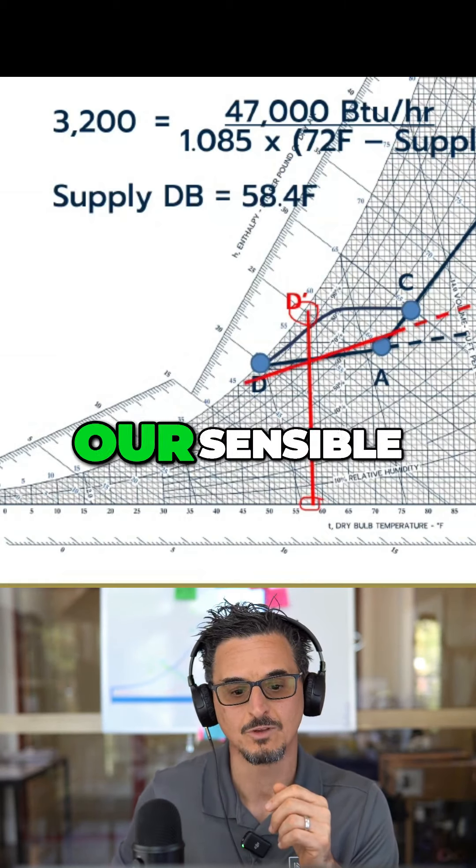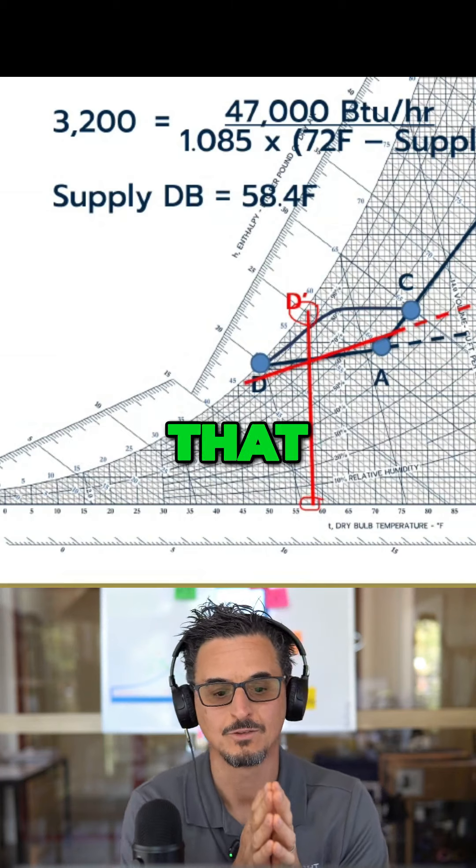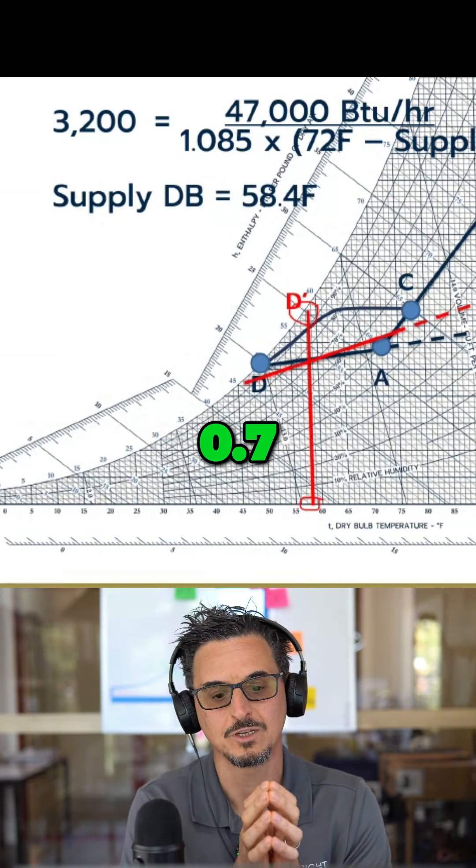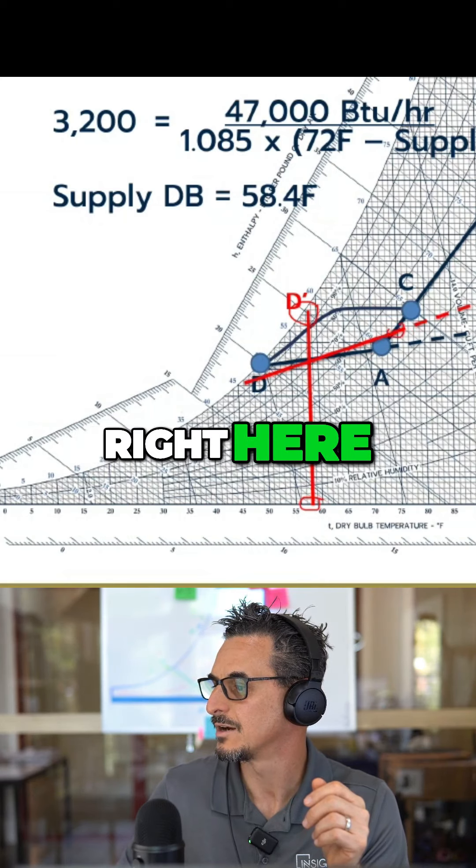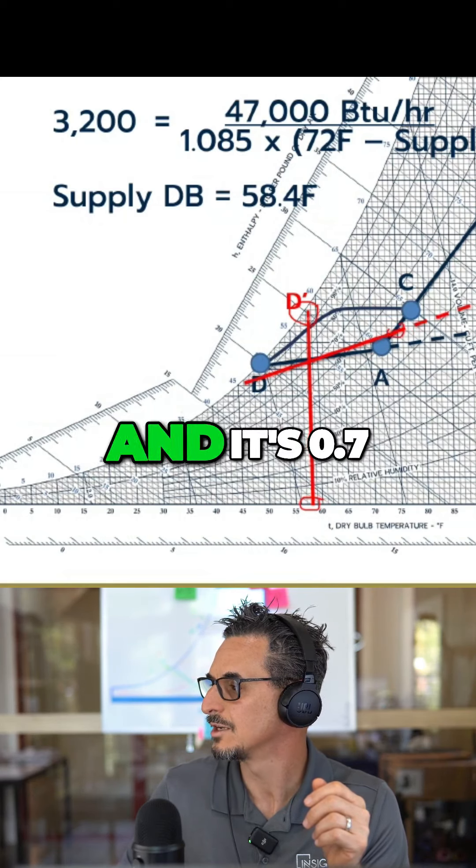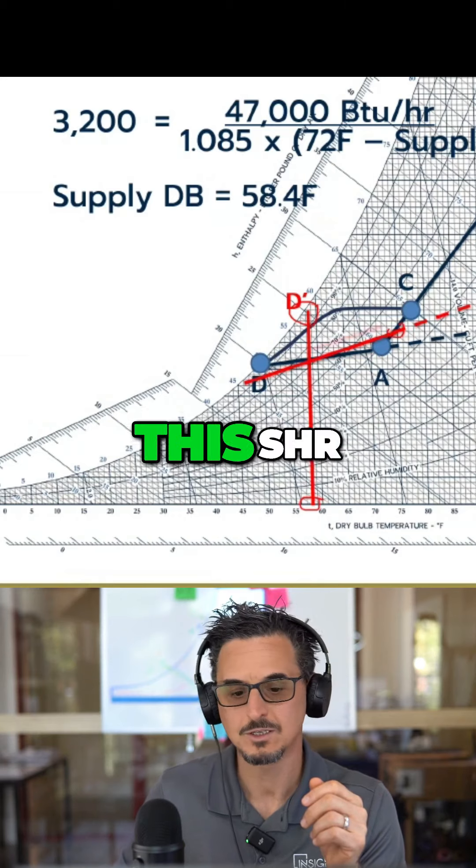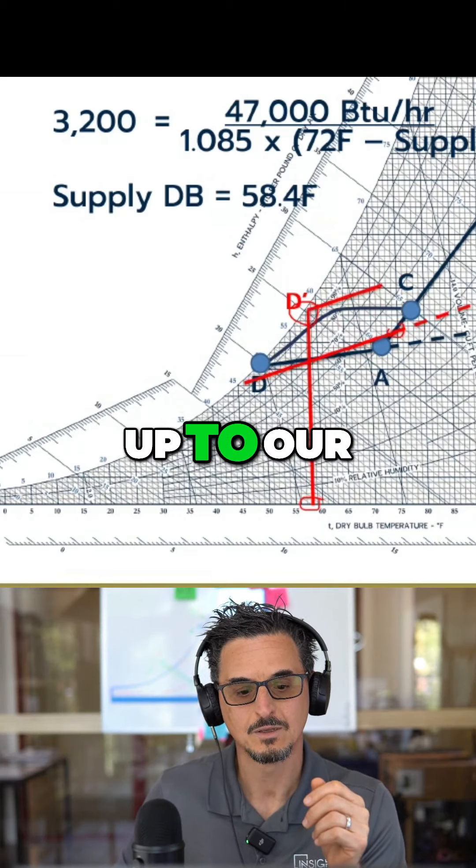So we use our sensible heat ratio to determine that. If we draw the SHR of 0.7 again, I'm drawing it through the index point which is right here, just to get the slope, and it's 0.7 here. Now we move this SHR up to our condition here.